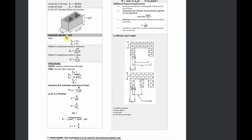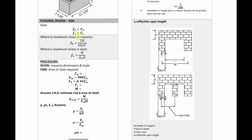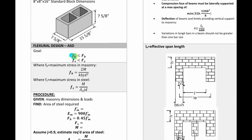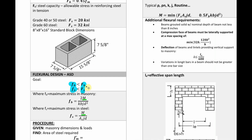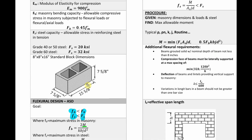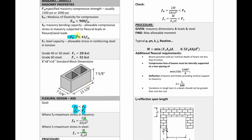Let's run through flexural design real quick. The goal is to basically get your actual stress — denoted by the small f — and make sure it's less than your capacity. FB is the maximum stress in the masonry and FS is the maximum stress in the steel. You'll get your moments from the loading given in the problem. What you need to do is find the capacities for FB and FS, and those are actually already given in the code. Your masonry bending capacity comes from this equation.